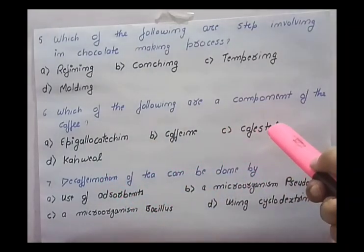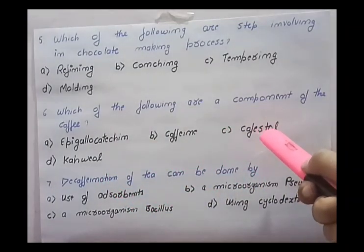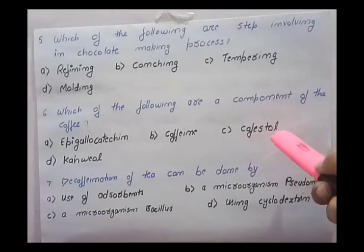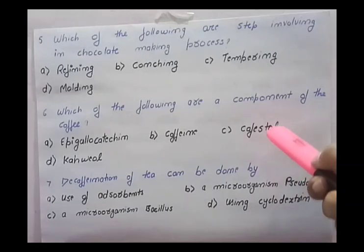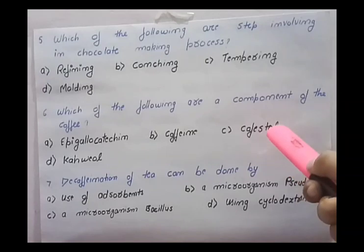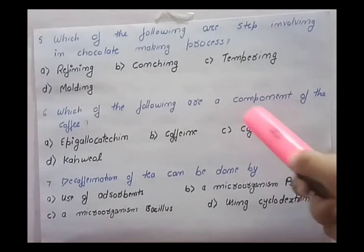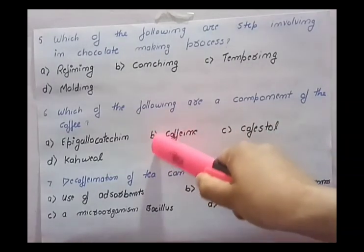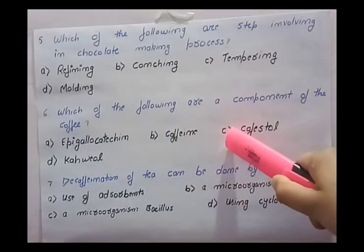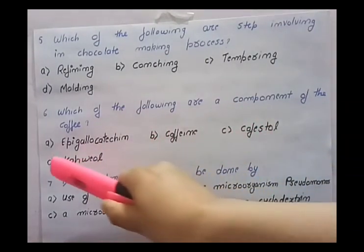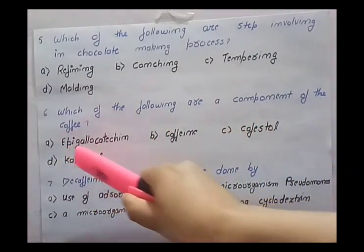Next options are cafestol and kahweol — these two are also present in coffee. These two are diterpenes and are important as anti-carcinogenic and anti-inflammatory compounds present in coffee. So the right options are caffeine, cafestol, and kahweol.